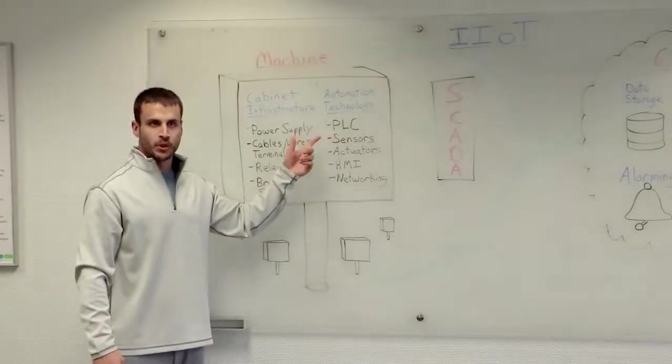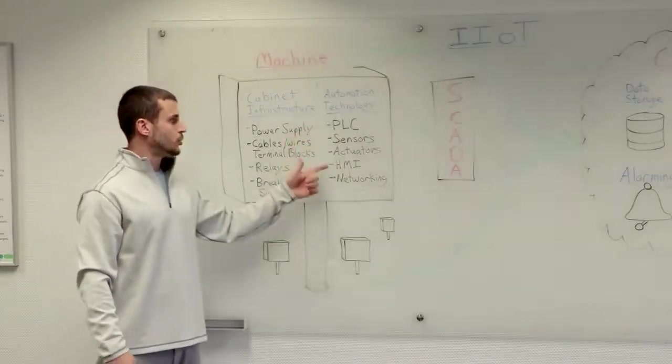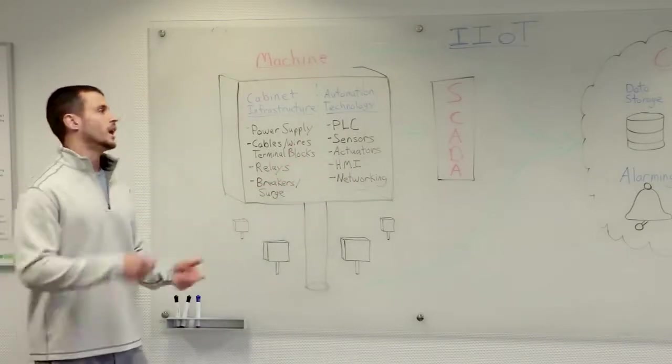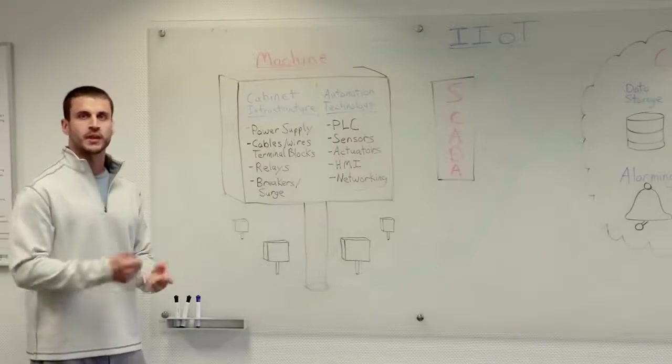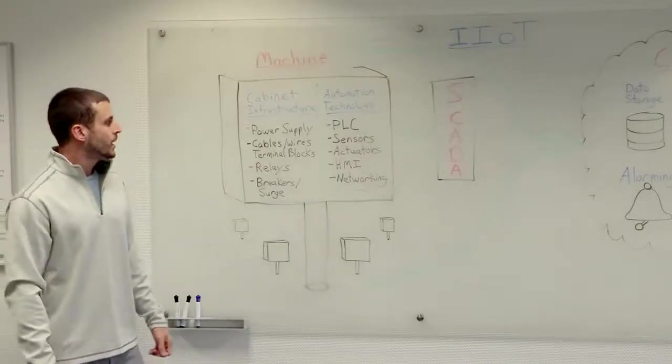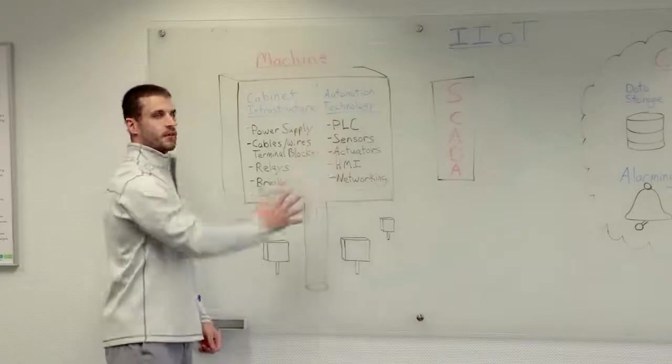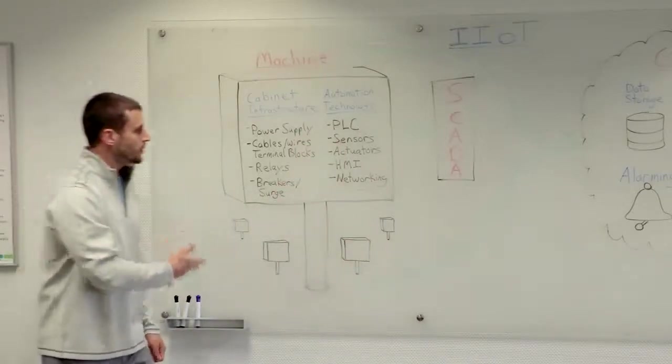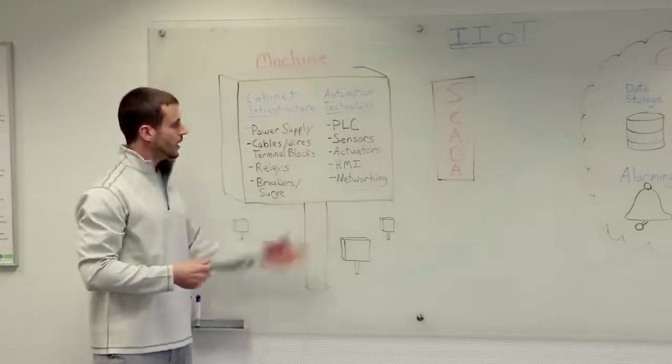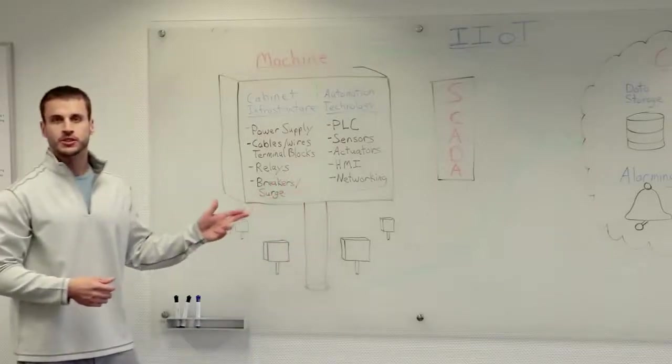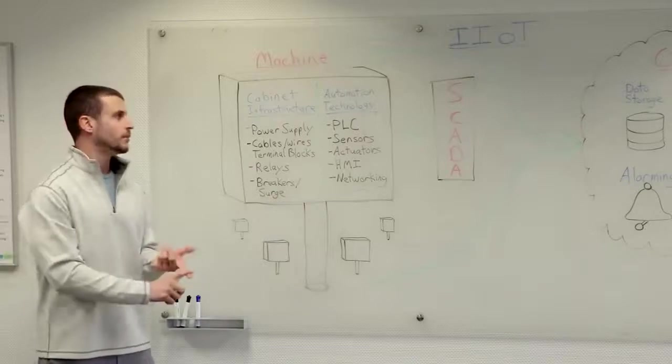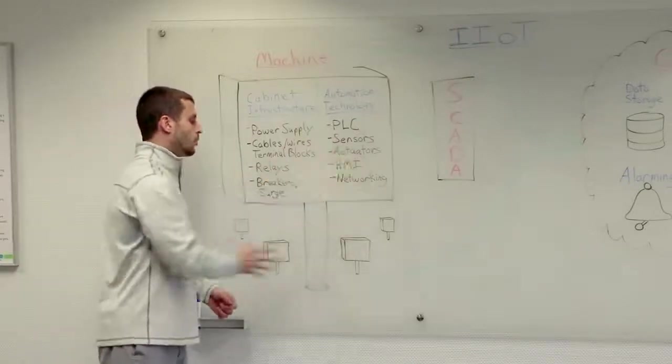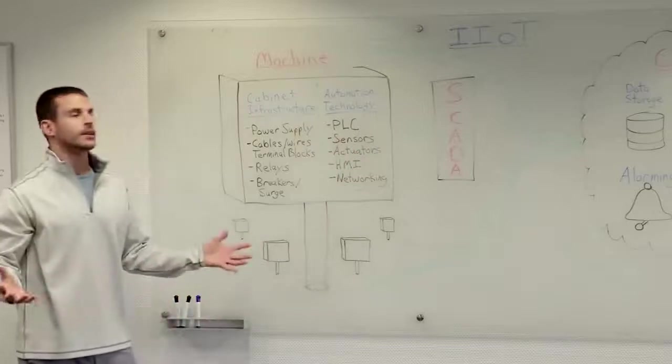Since the PLC is a computer, a lot of times you'll have a human machine interface, or an HMI, so that an operator can access the PLC locally and make some changes and see what's going on in real time. And then finally, a lot of times you don't just have one machine. You might have a bunch of machines out in the field, and you might want them to talk to each other. So you'll have things like networking technology, which is your routers, and your switches, and your gateways, and your WLANs. Anything that lets this machine share data with any of the other machines on the network.